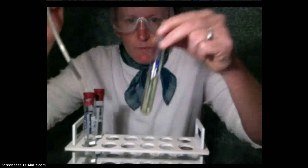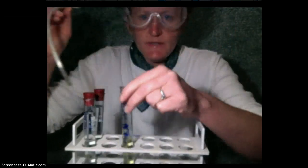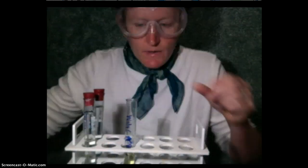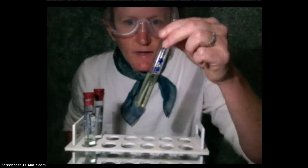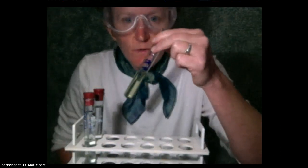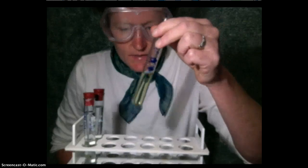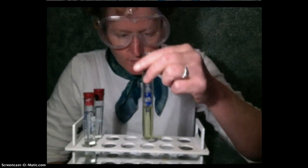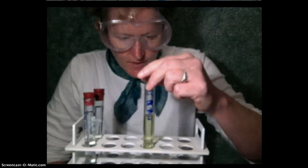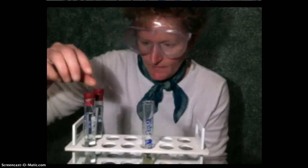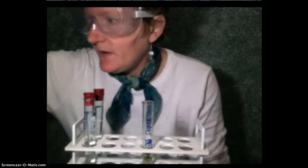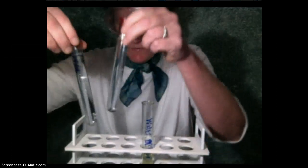What started out blue is now a nice yellow. So indicators can not only tell us a yes or no question, sometimes they can tell us how much by changing from blue to yellow, and they can do it slowly enough that we can kind of tell how much acid is there.